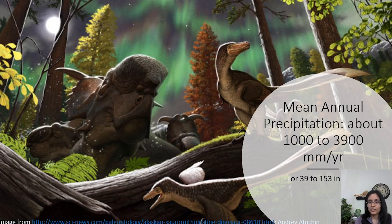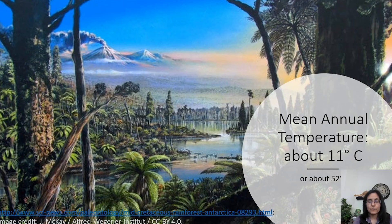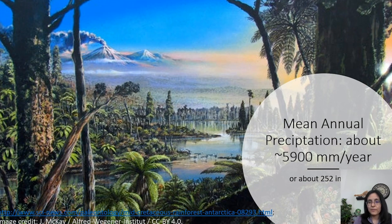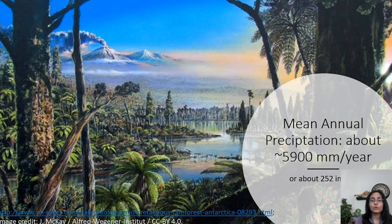Those are the kinds of conditions that existed in the Cretaceous period in Alaska. Some scientific literature suggests Cretaceous Antarctica had a mean annual temperature of around 11 degrees Celsius, or about 52 degrees Fahrenheit, and mean annual precipitation of about 5,900 millimeters per year — a phenomenal amount, greater than even the Amazon rainforest. Climate scientists are continually working to improve and refine these estimates to better determine whether it was really that wet in Antarctic during the Cretaceous.